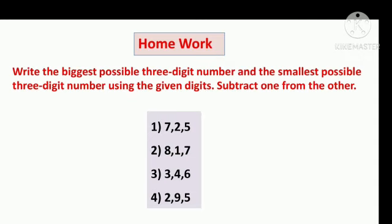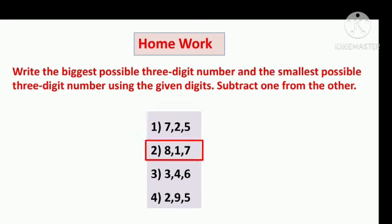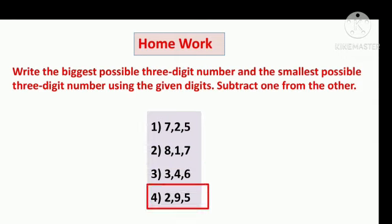Homework: Write the biggest possible 3-digit number and the smallest possible 3-digit number using the given digits, then subtract one from the other. The digit sets are: 7, 2, 5; then 8, 1, 7; then 3, 4, 6; and then 2, 9, 5.